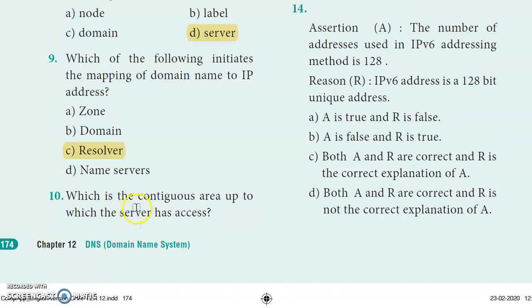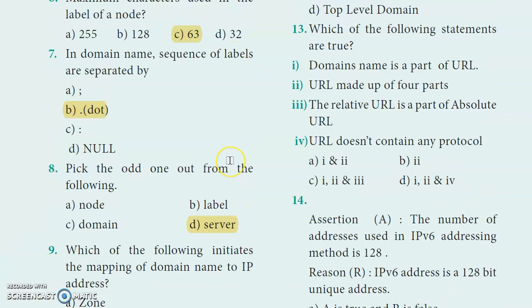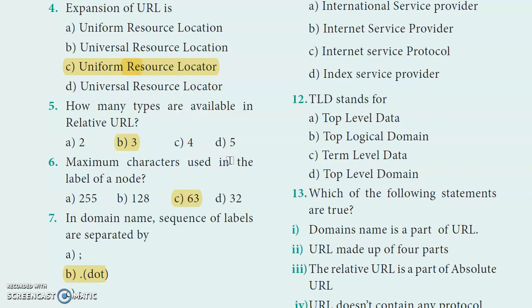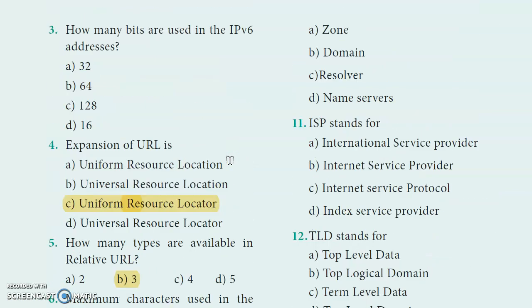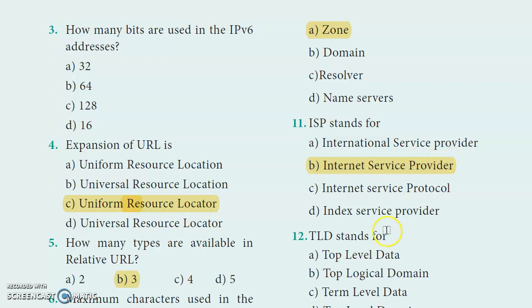Tenth question: Which is the contiguous area up to which the server can access? The answer is option A - zone. Eleventh question: ISP stands for what? The answer is option B - Internet Service Provider.